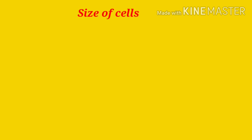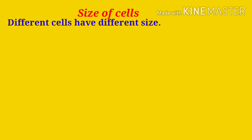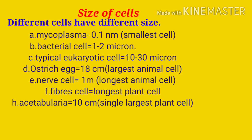Now we talk about the size of cells. Different cells have different sizes. For example, Mycoplasma has a size of 0.1 nanometer — it is the smallest cell. Bacterial cell is 1.2 microns. A typical eukaryotic cell is 10 to 30 microns. The ostrich egg is 18 cm and is the largest animal cell. The nerve cell is 1 meter long — the longest animal cell. The fiber cell is the longest plant cell, and Acetabularia is the single largest plant cell.